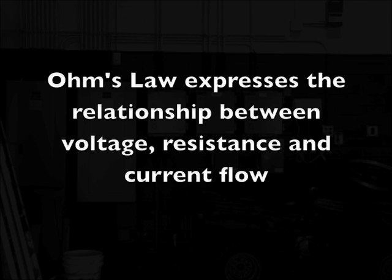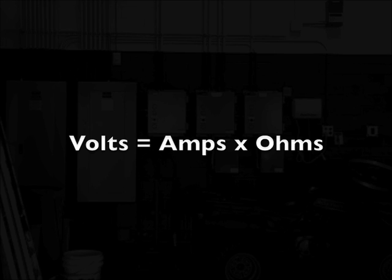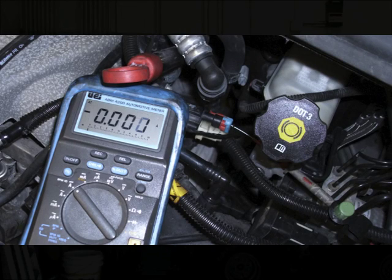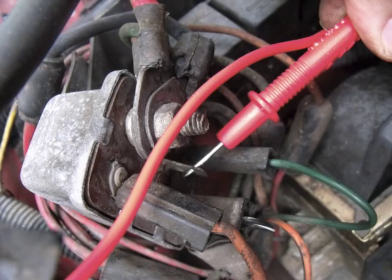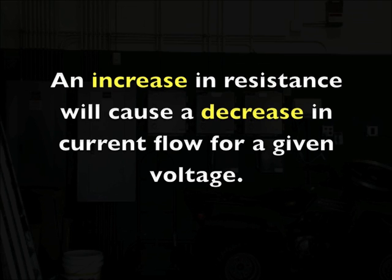Ohm's law is a representation of the relationship between electromotive force, electron flow, and restrictions to flow. It states the relationship between volts, current, and resistance as: voltage equals current times resistance, or volts equals amperage times ohms. The important things to learn from Ohm's law can be summed up in two statements: a decrease in voltage will cause a decrease in current flow for any given resistance; and an increase in resistance will cause a decrease in current flow for any given voltage.